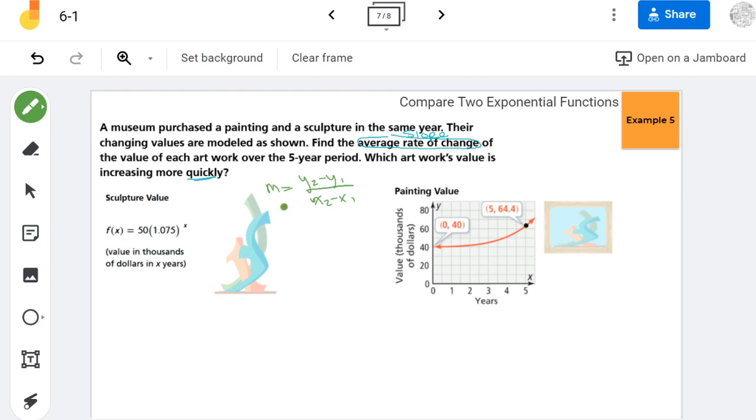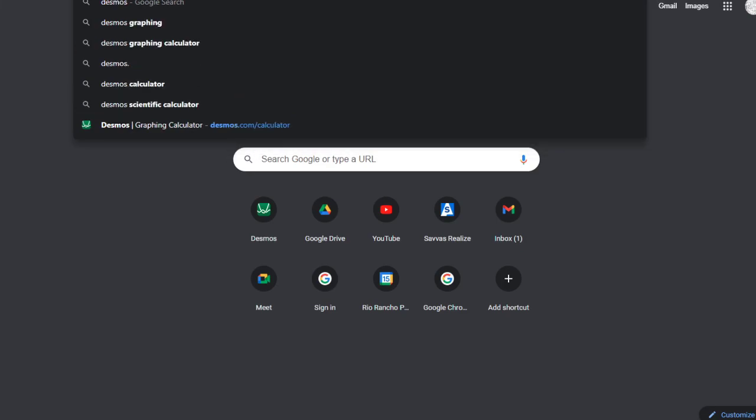This one they give us ordered pairs so it's easy. But here on the equation I don't have those y values. So first I'm going to find those y values. So I'm going to find f of 0 and f of 5 for this equation. This top one's easy because any number to the 0th power is 1 and 50 times 1 is 50. This bottom one, a little less so.